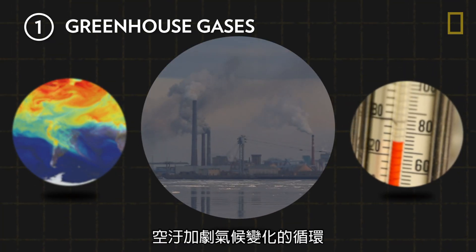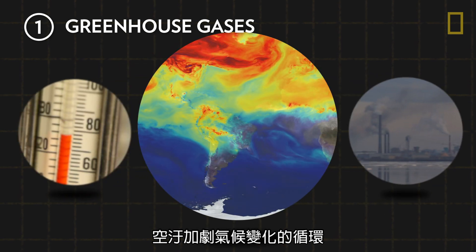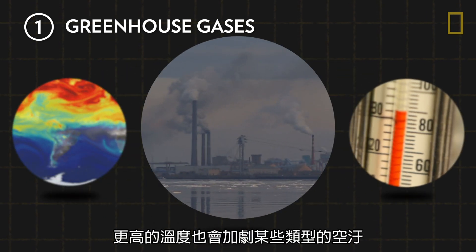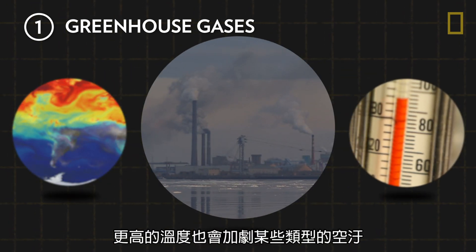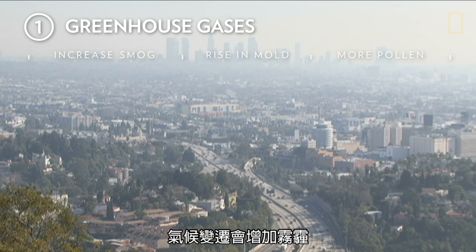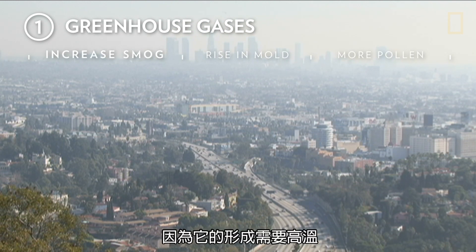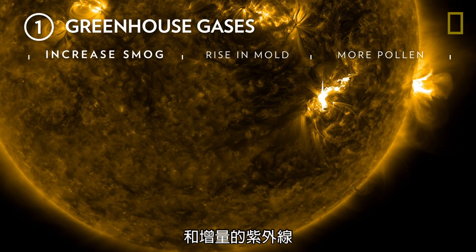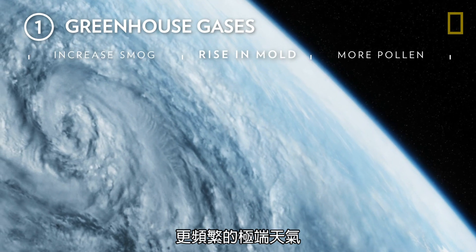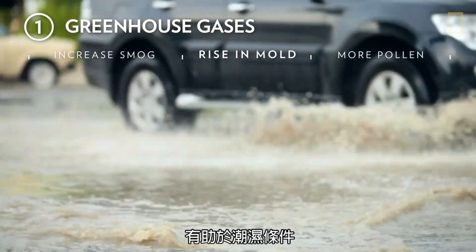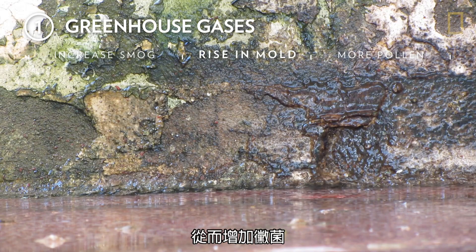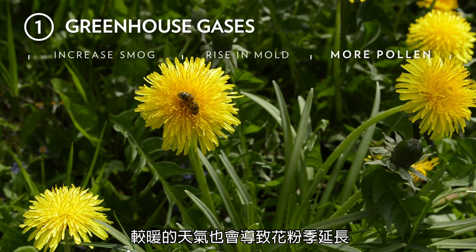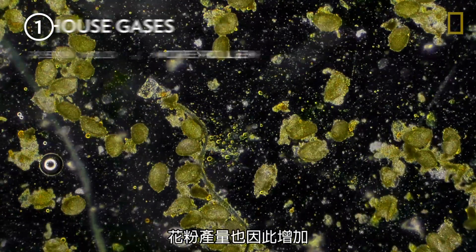This creates a cycle where air pollution contributes to climate change, and climate change creates higher temperatures. In turn, higher temperatures intensify some types of air pollution. For example, climate change increases smog because it forms in the presence of high heat and increased levels of ultraviolet radiation. More frequent extreme weather, such as flooding, contributes to damp conditions and therefore to a rise in mold. Warmer weather also leads to longer pollen seasons and therefore more pollen production.